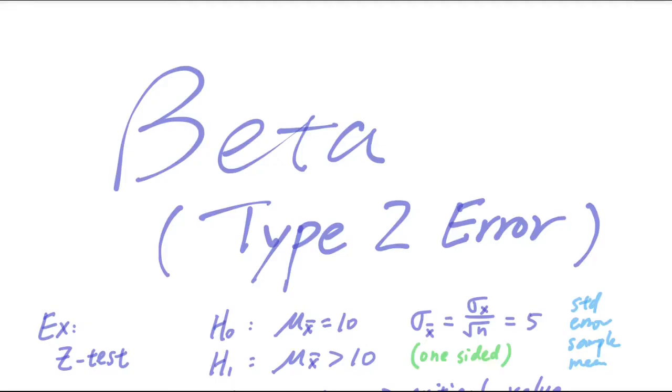Hello everybody, today I am going to talk about beta in hypothesis testing. Beta is also associated with the type 2 error. Let's go for an example using the z-test.